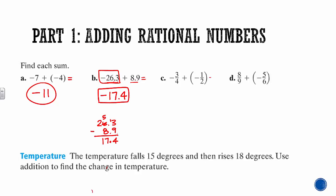Next: negative 3/4 plus negative 1/2. Both signs are exactly the same — they're both negative — so we know our answer has to be negative. We can't add these without common denominators, but it's easy to turn 1/2 into 2/4. So 3/4 plus 2/4 gives us 5/4. Since both numbers were negative, our answer has to be negative 5/4.